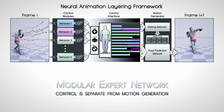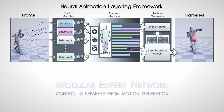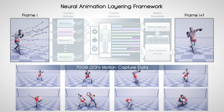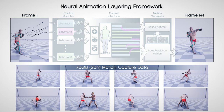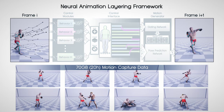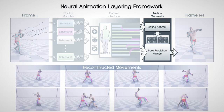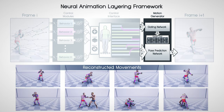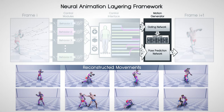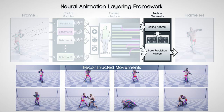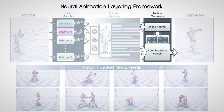Our deep learning framework imitates animation layering and separates the motion generation from the control process. We train our system from 20 hours of motion capture data and predict the pose from one frame into the next. First, we train an expert model to learn and reconstruct the entire unstructured motion data from a set of motion trajectories in a task-agnostic manner.